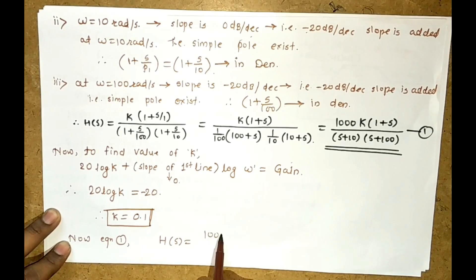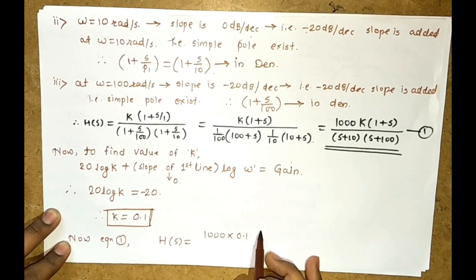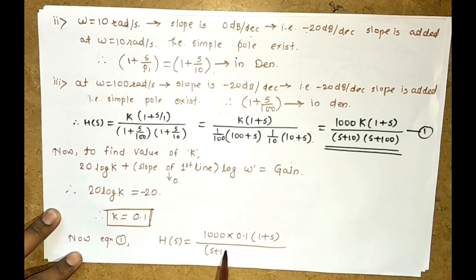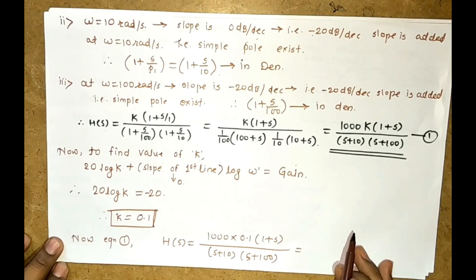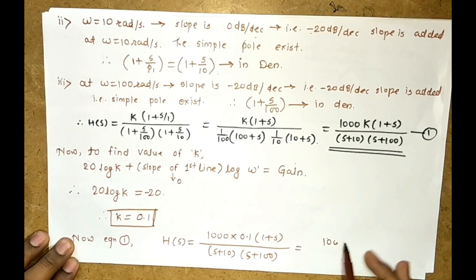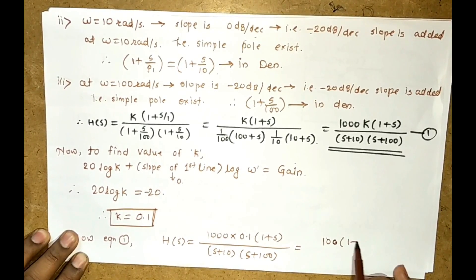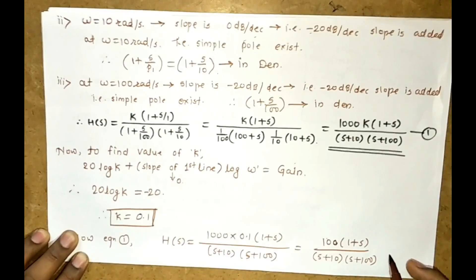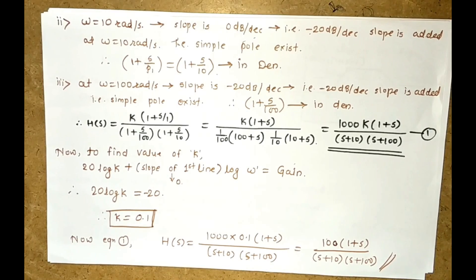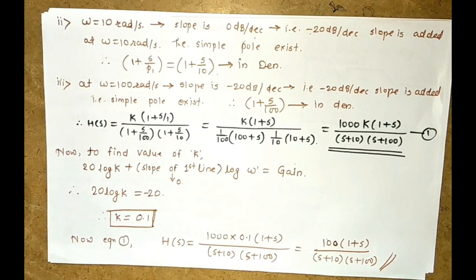So H(s) equals 1000 times 0.1 times (1 + s) divided by (s + 10)(s + 100), which simplifies to H(s) equals 100(1 + s) divided by (s + 10)(s + 100). Let us try to solve more numericals to find the transfer function from a magnitude plot.